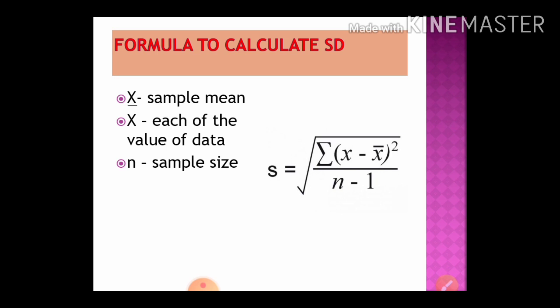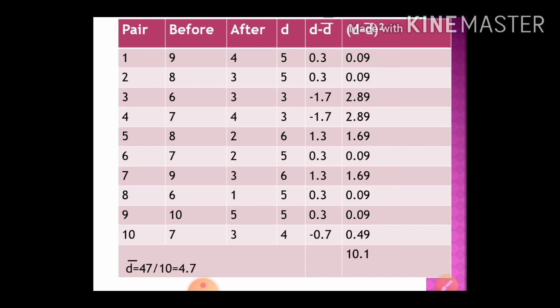Let us see the table in detail. The first column lists the pair numbers 1 to 10. The second column has the values before intervention, and the third column has the values after intervention. The column d indicates the difference between the before and after values — for example, the first row is 9 minus 4 equals 5. We calculate the difference for each row. The total of all differences comes to 47, and the mean d-bar is 47 divided by 10, which equals 4.7.